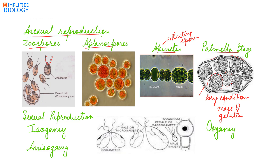The formation of zoospores, aplanospores, and even gametes occurs in the same manner. When a zoospore is formed, the protoplasm of the parent cell contracts; its nucleus undergoes mitotic divisions; each nucleus gets surrounded by some amount of protoplasm; wall formation occurs; and they develop two flagella at the anterior end, which then swim out from the parent cell. In the same manner, gametes are also formed.